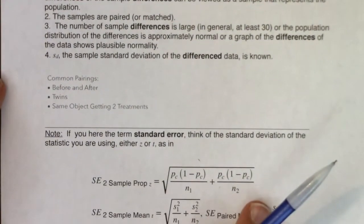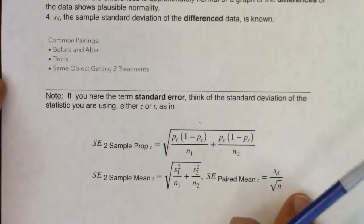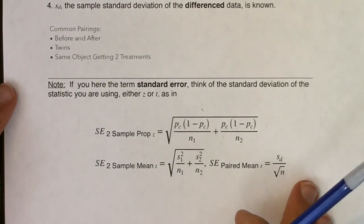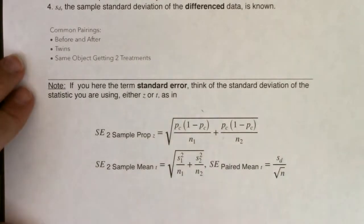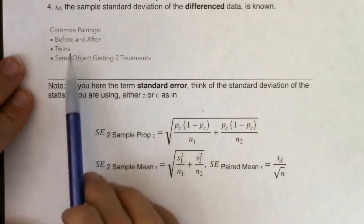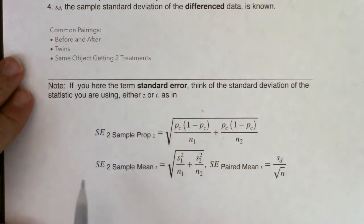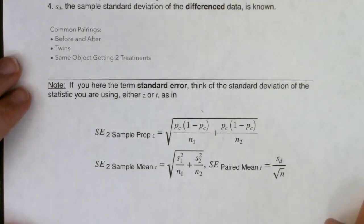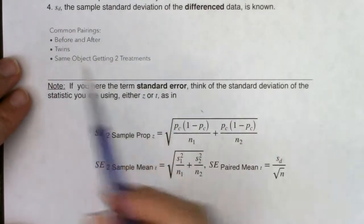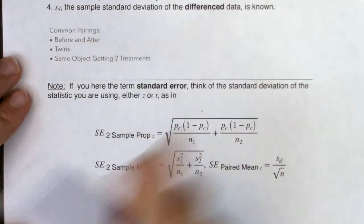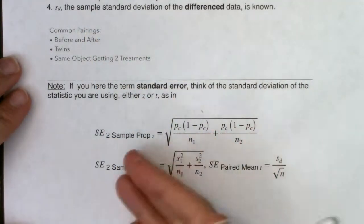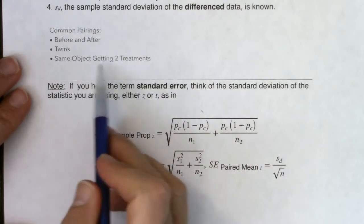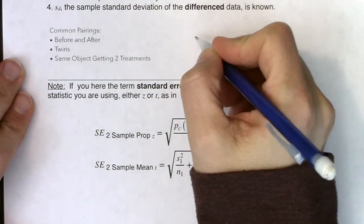As we start to go through this, the most common paired data setup you'll read about is the before-and-after — that is one of the more common ones, where one person gets both treatments. Very common pairings: anytime you see before and after, it's going to be paired. Twins — statisticians love twins. We love to test genetic things on twins because they have the same DNA. With twins we'll give one a treatment, the second twin the placebo or an alternate treatment, and compare those two data sets.